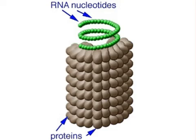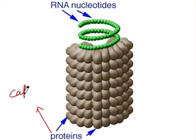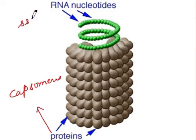Let us see the structure. In TMV, tobacco mosaic virus, the protein coat — that is the outer protein coat — is made up of individual pieces known as capsomeres. These capsomeres are arranged to form a hollow capsule, or capsid, in which a single-stranded RNA is present in the form of a coiled structure.